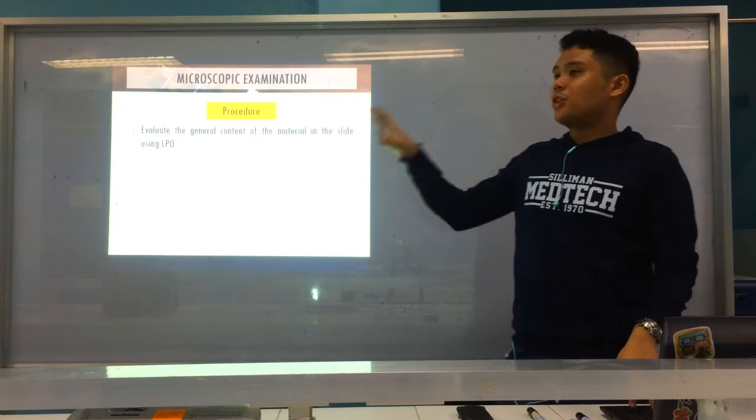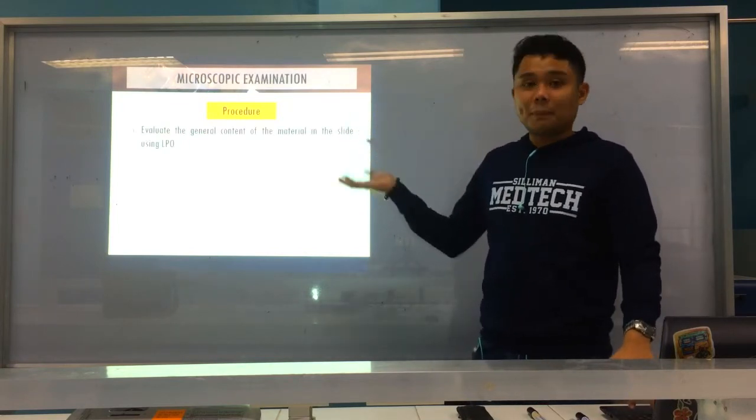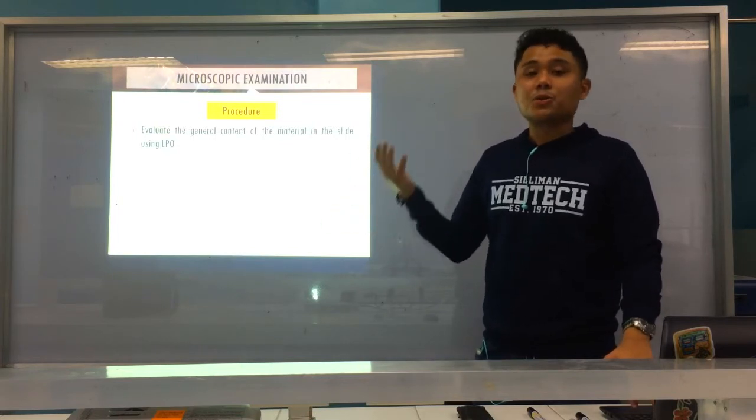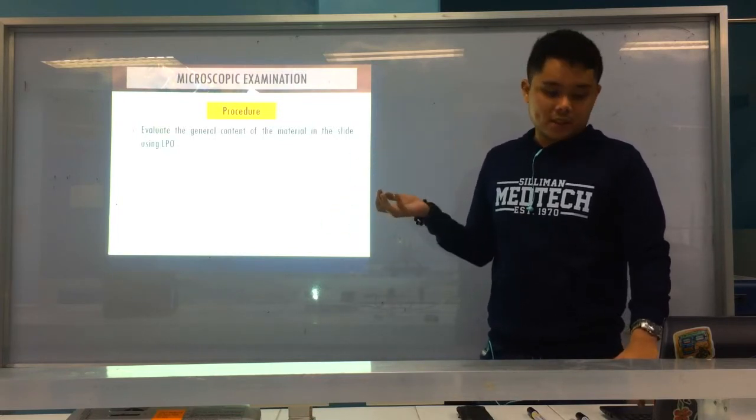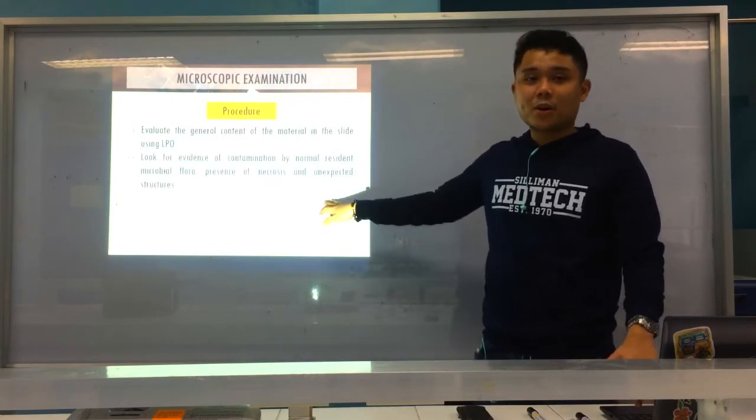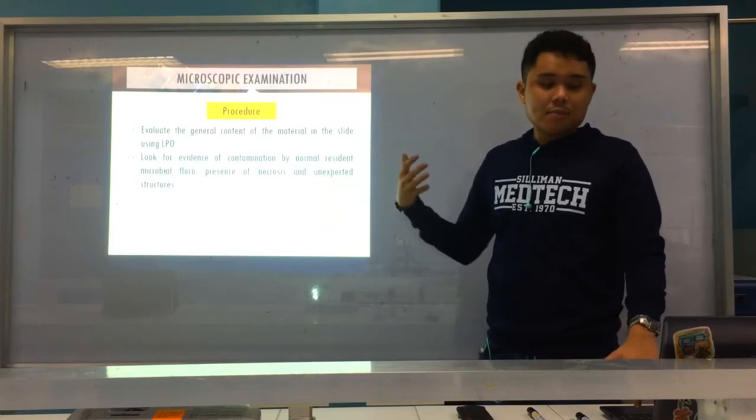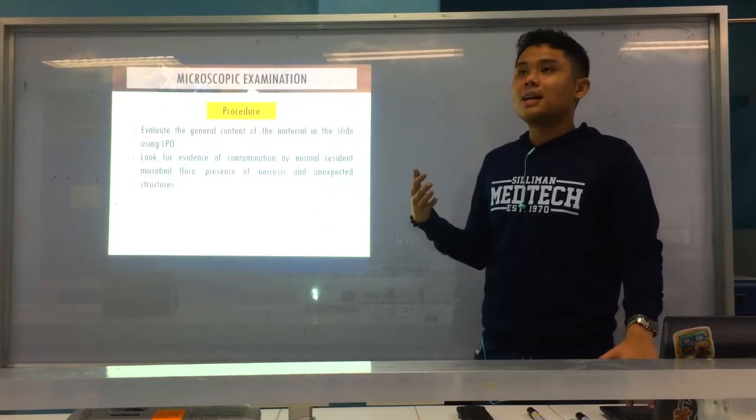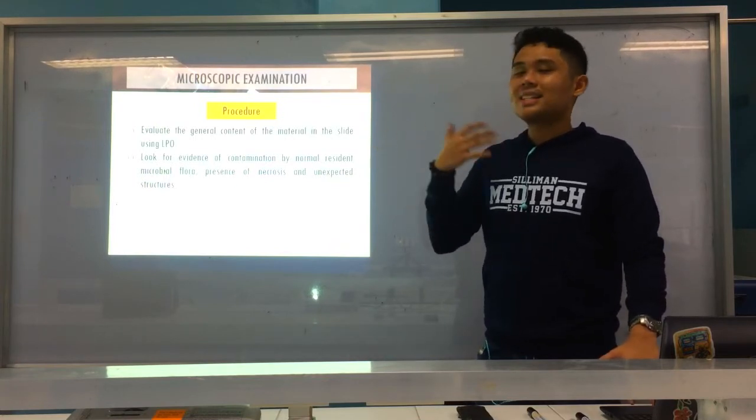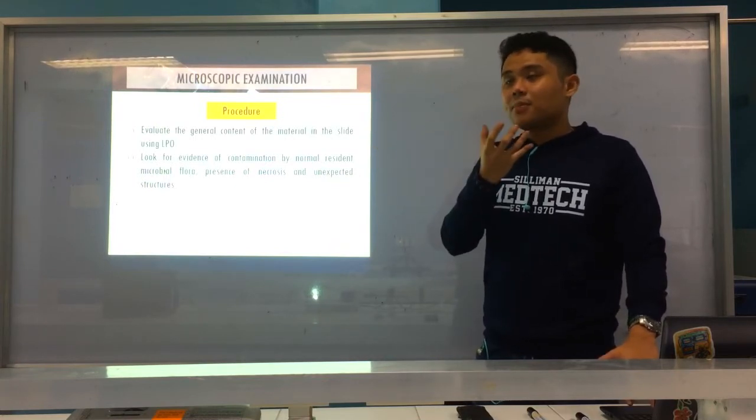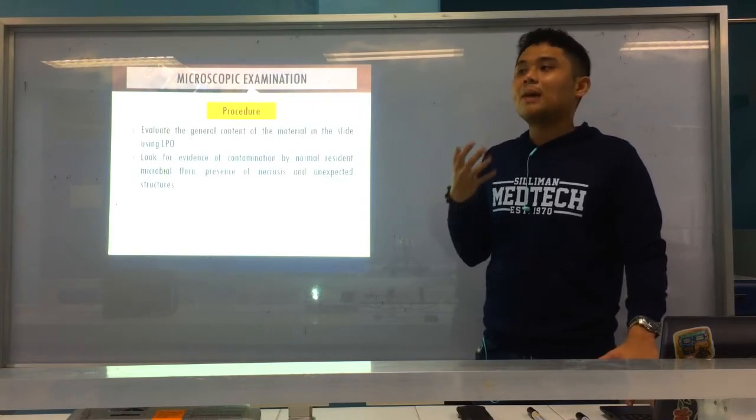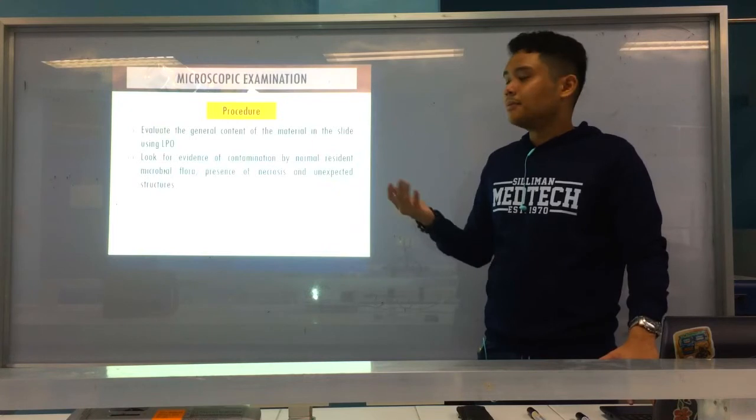For procedure, we first evaluate the content of the slide under LPO. Because under LPO, you can see the cells present, not only the bacteria, but also the WBCs and other cells in the specimen. Look for evidence of contamination, example by normal resident microbial flora or unexpected structures, example lots of squamous epithelial cells from the mouth or throat or other sites. So meaning it's highly contaminated.